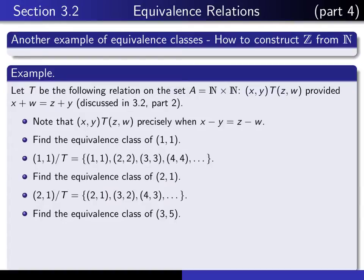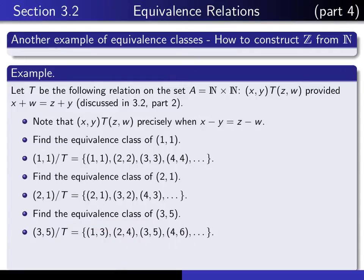The equivalence class of (3, 5): this time the difference 3 minus 5 is minus 2. So that equivalence class consists of all pairs for which, when you subtract the first minus the second, you get minus 2. Notice this use of notation to indicate the equivalence class of that particular element.